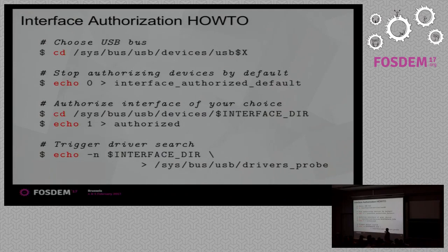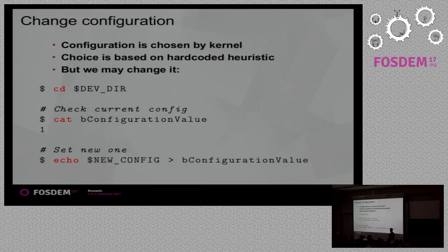What if the kernel chose the wrong configuration? We may have multiple configurations and the kernel chose the first one. We simply go to the device directory, check the current configuration, and write to that attribute to set a new one. No rocket science.